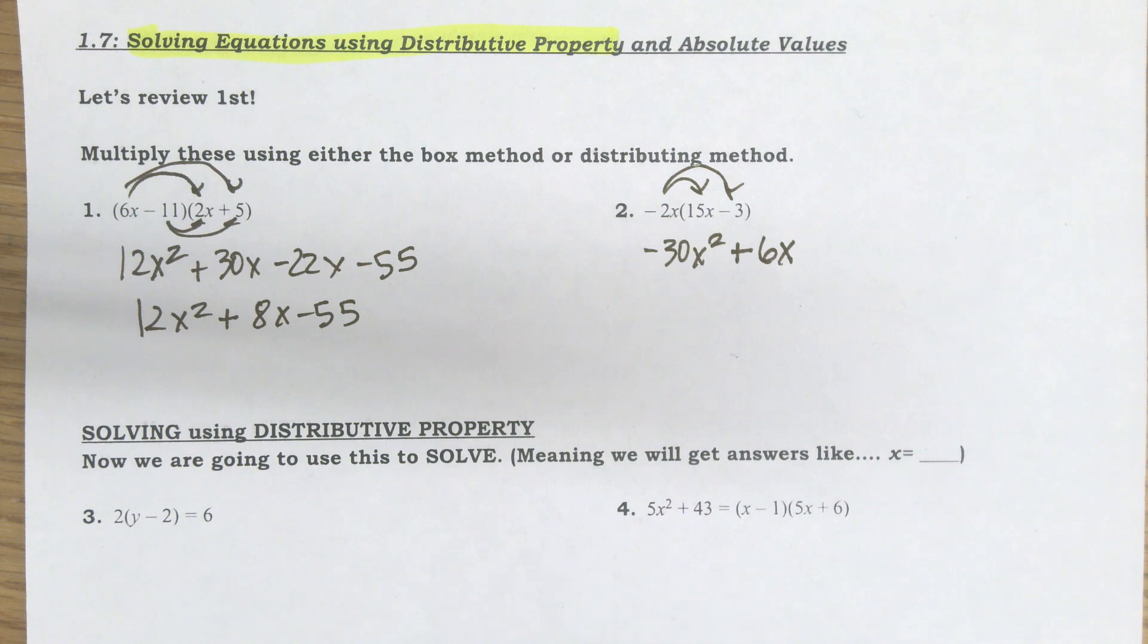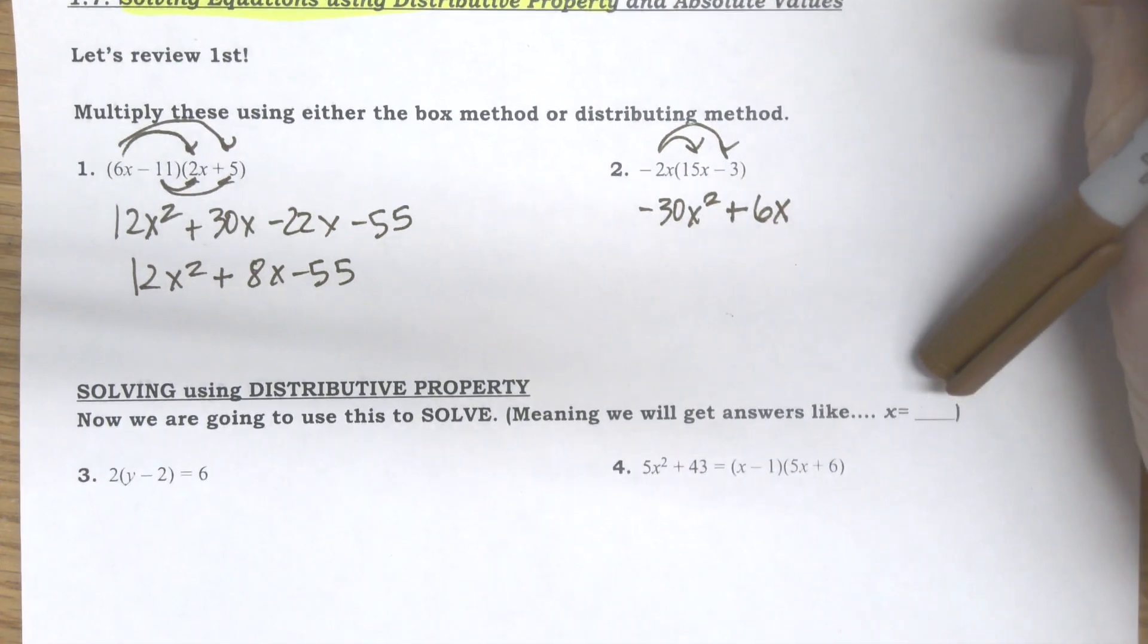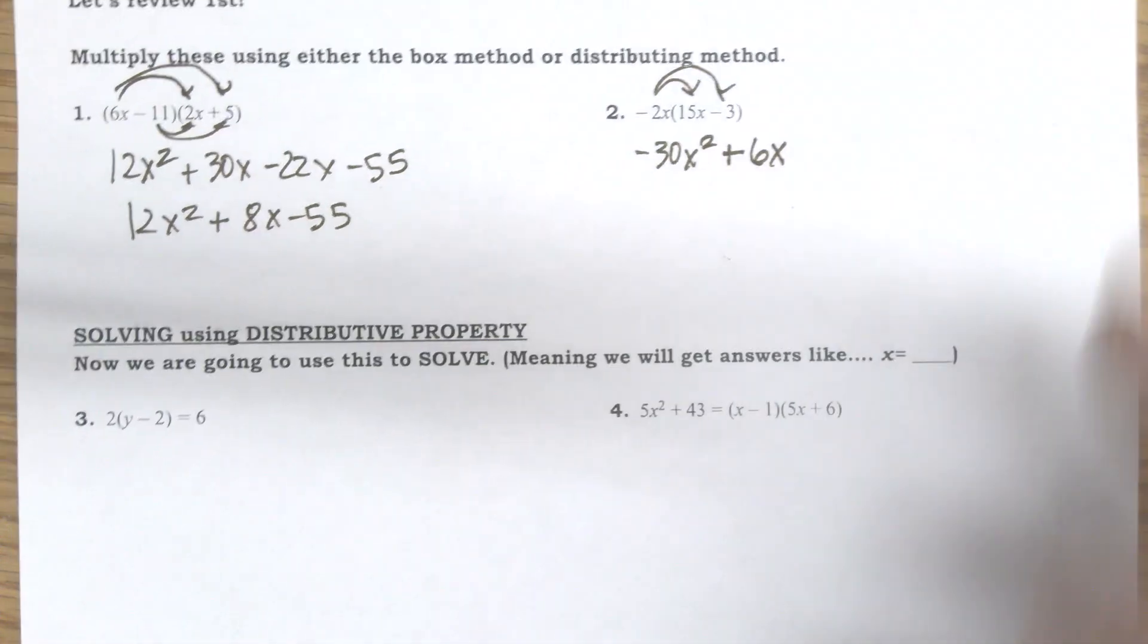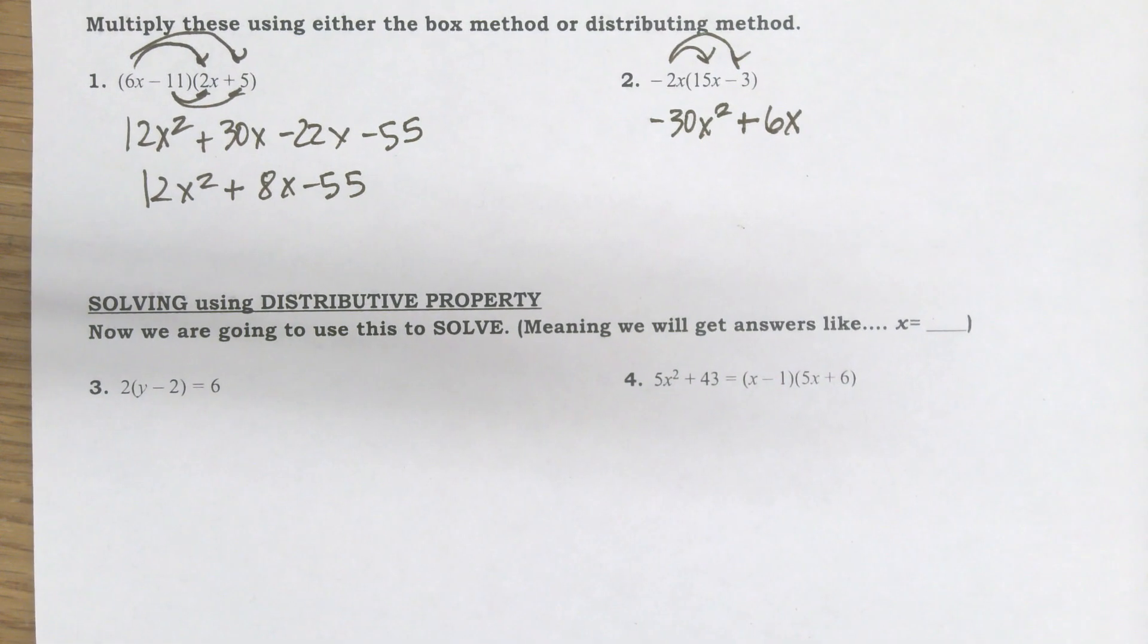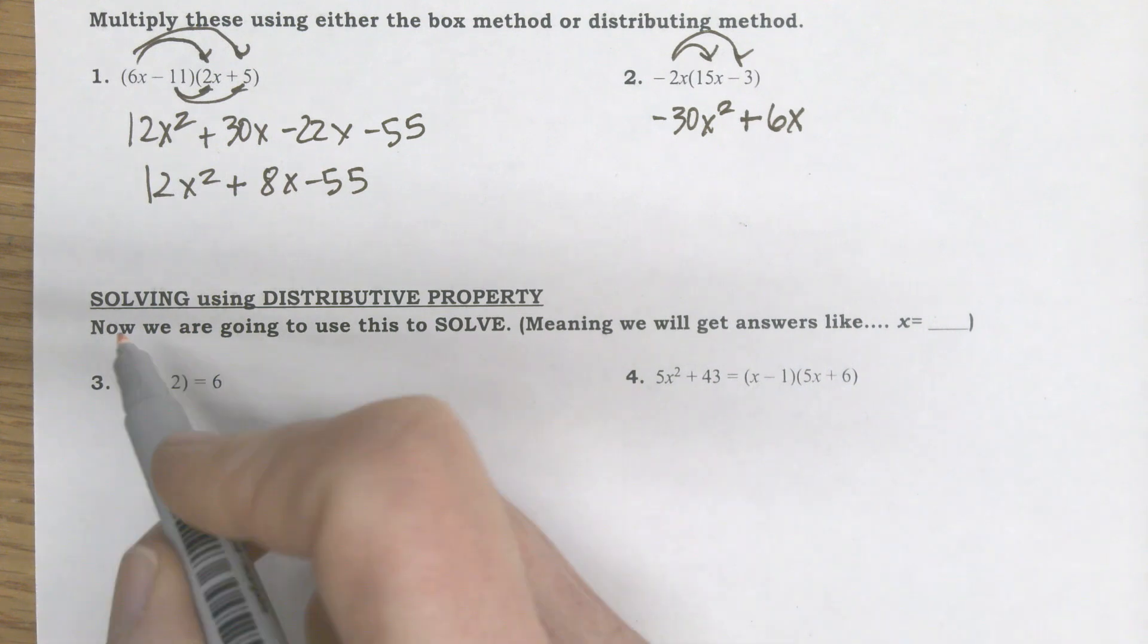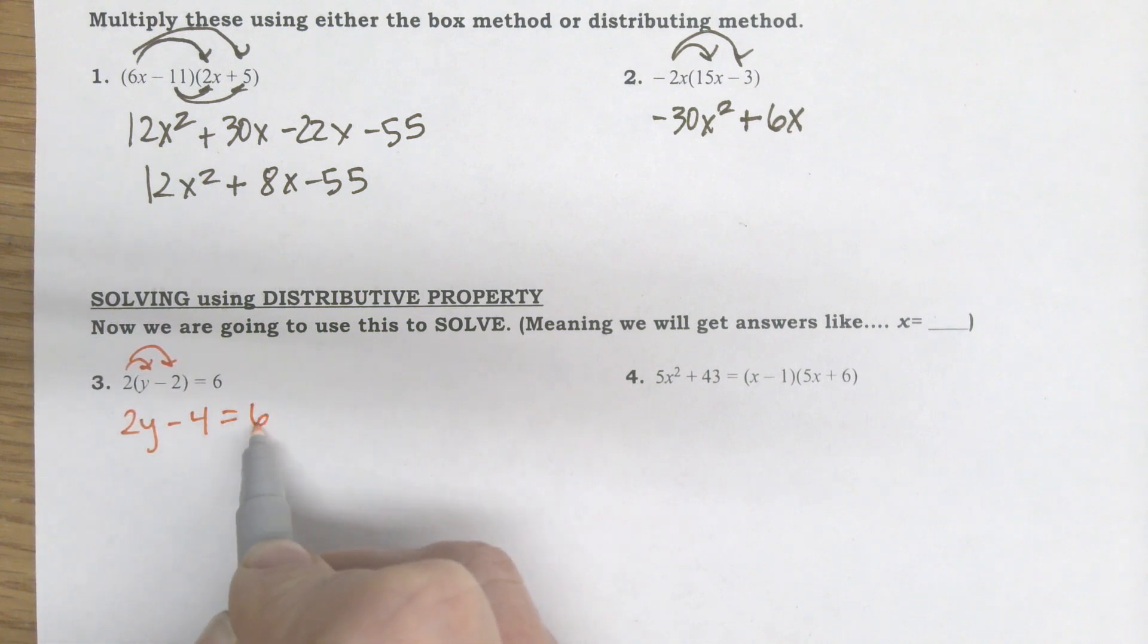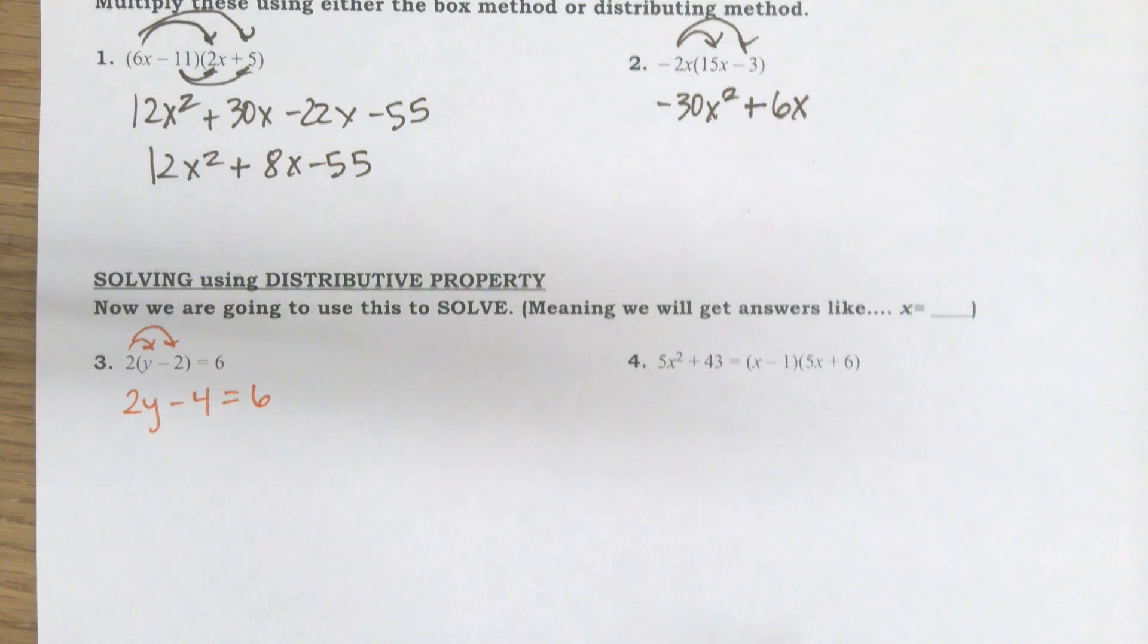Alright, so let's go ahead and get into our solving using distributing. So it's going to be using some of those techniques in solving that you've done many times before in many classes, but sometimes we just don't always remember how to do them. So I'll go through it slowly. And if you find some ways that you can skip some steps or speed stuff up, you're always more than welcome to. So I'm going to distribute 2y minus 4 equals 6.